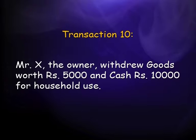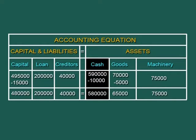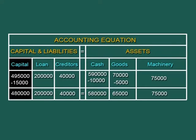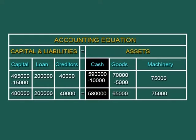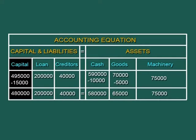Tenth transaction: Mr. X, the owner, withdrew goods worth rupees 5,000 and cash rupees 10,000 for personal use. The owner is withdrawing rupees 15,000 total — rupees 5,000 in goods and rupees 10,000 in cash. Capital decreases by rupees 15,000, cash decreases by rupees 10,000, and goods decrease by rupees 5,000. The asset side decreases by rupees 15,000 in total, and the equation remains balanced.